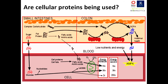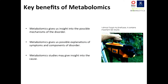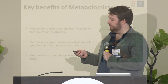We wanted to know what cellular proteins are being used for in this process — something we can't fully see from this data — to understand the amounts of fatty acids and amino acids being used, and that's something we would definitely like to study in the future. Key benefits of metabolomics are therefore to give insight into possible mechanisms of the disorder, provide explanations of symptoms and components of the disorder, and metabolomics studies may give us insight into the cause one day.